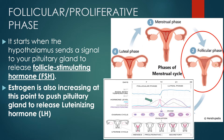The follicular or proliferative phase starts on the first day of your period, so there is some overlap with the menstrual phase, and ends when you ovulate. It starts when the hypothalamus sends a signal to your pituitary gland — the master gland — to release follicle stimulating hormone or FSH, which assists the maturation of follicles and causes secretion of estrogen. Estrogen then pushes the pituitary gland to release luteinizing hormone, which also initiates follicle maturation. So three hormones are involved: FSH, LH, and estrogen.